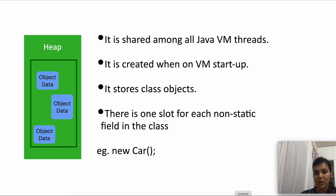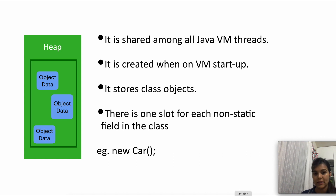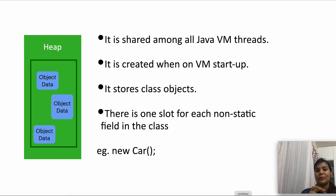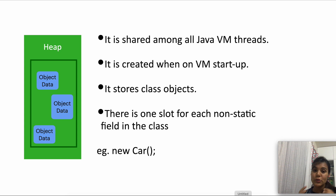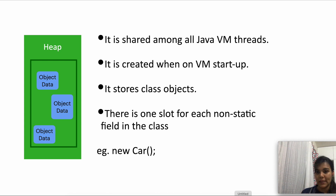The heap is famous for storing object data. It is also created on VM startup and is shared among all JVM threads. It stores the class objects. The object data will have slots for each of the non-static fields in the class — for example, instance variables of a car class would be things like speed, current gear, wheels, etc. The heap memory is not explicitly deallocated — there is proper memory management for the heap, because when the JVM is unable to allocate new memory in the heap to an object, it gives a heap out-of-memory error.